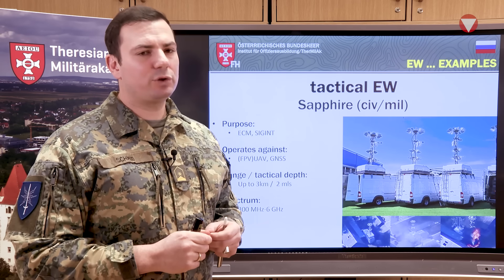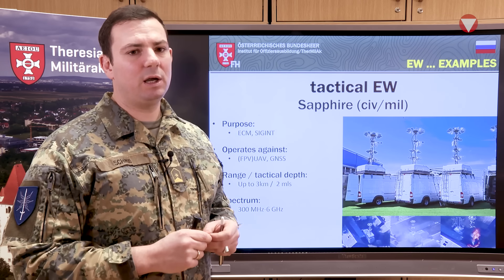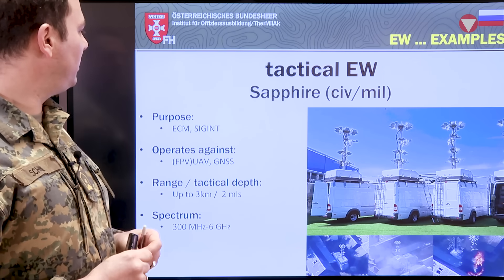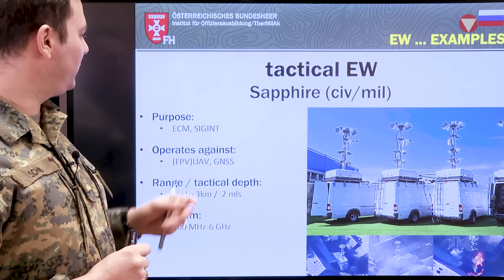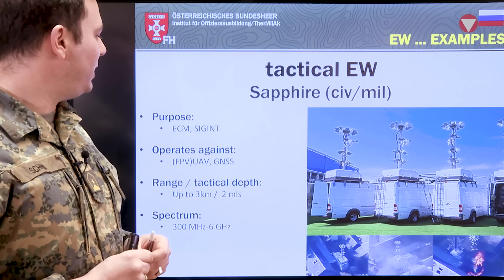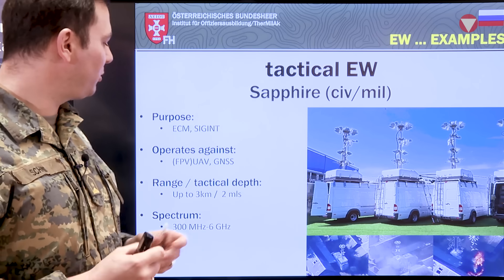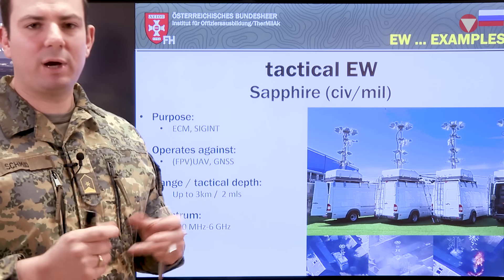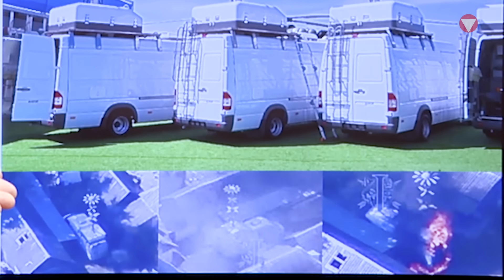The last system shown is the SAFIRE system — a civilian and military dual-use platform. It operates as a signal intelligence platform capable of electronic countermeasures, targeting UAVs and GNSS. Its range is up to 3 kilometers — around 2 miles — operating in a spectrum of 300 MHz up to 6 GHz. On the lower half of the screen, you can see the destruction of the last system in the Kursk area, taken out by Ukrainian special forces.